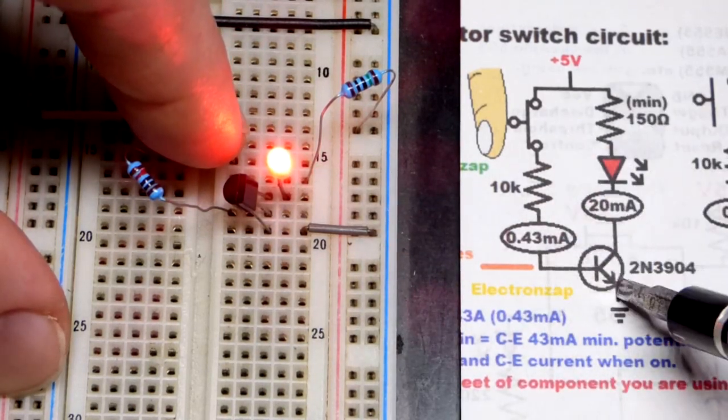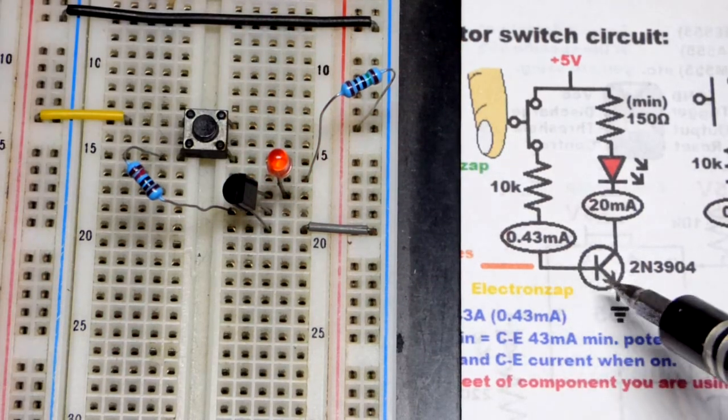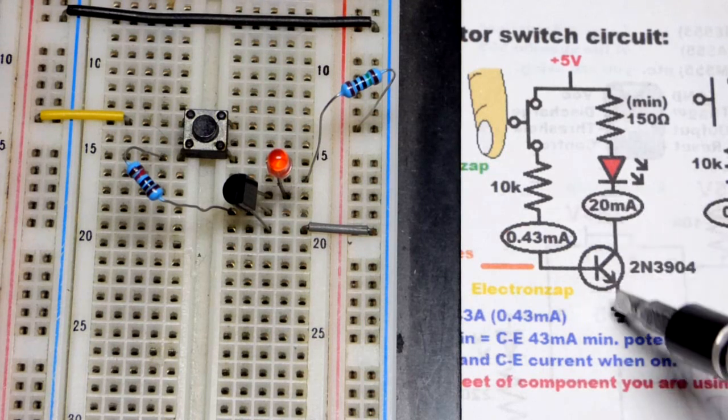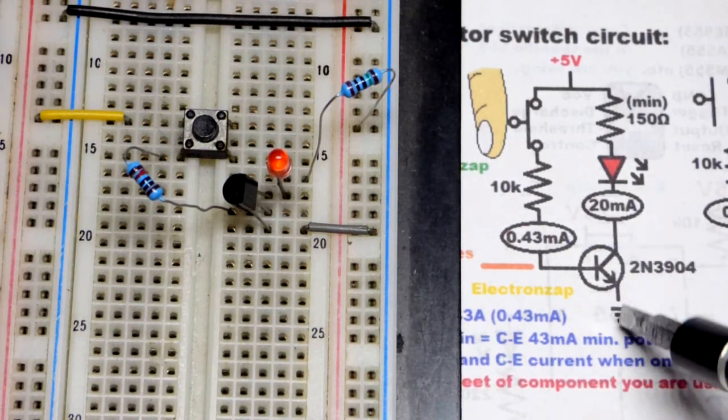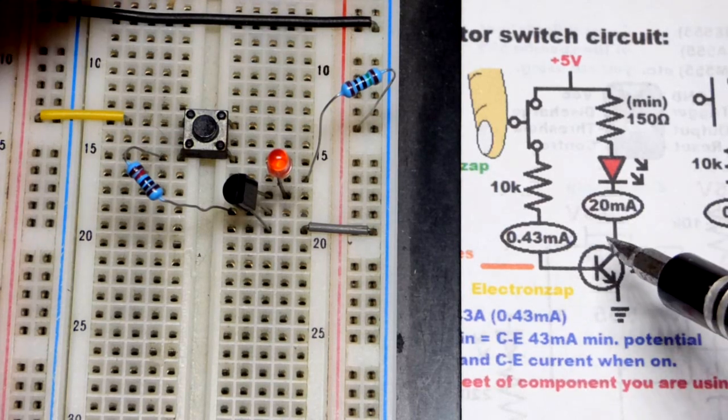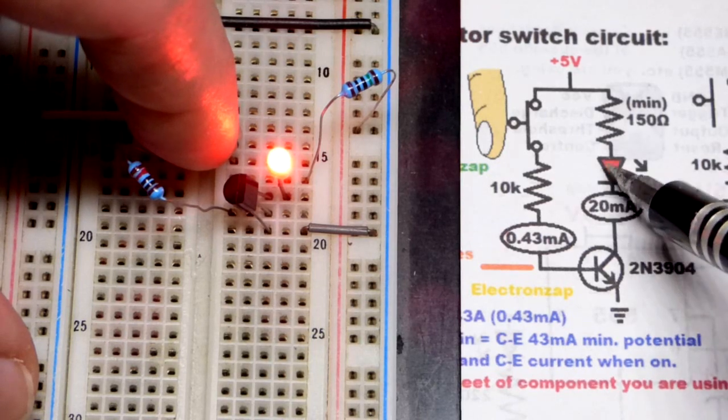When it comes to NPN bipolar junction transistor the amount of current flowing from base to emitter, the collector to emitter will let probably 100 to 300 times as much current. So more than probably 20 milliamps of current will be allowed through. But the load limits the current.